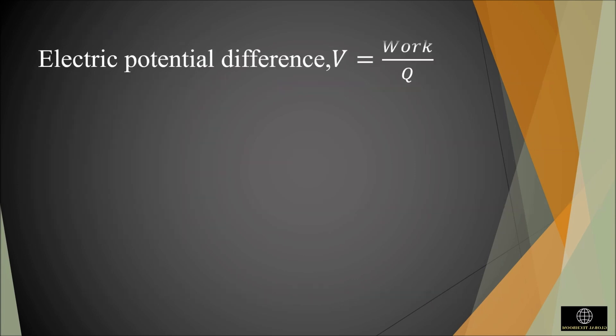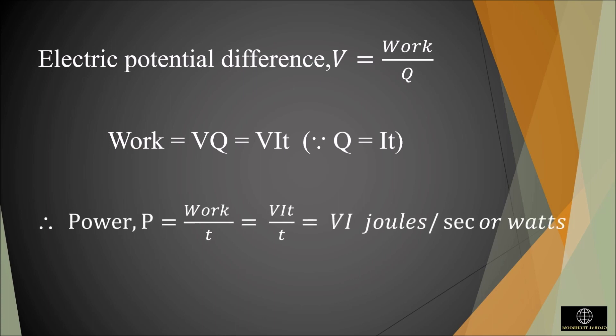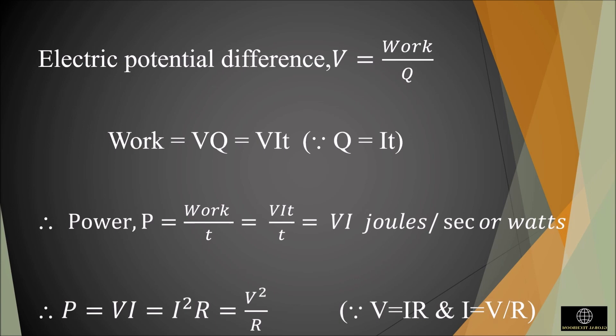The electric potential difference equation V is equal to work by Q, where Q is charge. So work is equal to V times Q. By substituting Q is equal to I times T, we get the equation as V times I times T. Electric power is equal to work divided by T, so substituting the equation of work, VIT divided by T, we get the equation as V times I. So power is equal to V times I. Now if we substitute V is equal to I times R, then the power equation becomes P is equal to I squared times R.